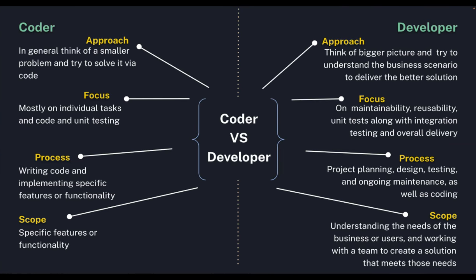Let's quickly compare what a coder and a developer think like. A coder has the approach of thinking of small problems and solving them via code, while developers think of the big picture and try to understand what the business actually wants. A coder focuses on individual tasks or user stories, while a developer thinks of broader prospects — for example, is the code I'm writing maintainable and reusable?